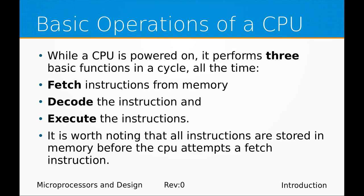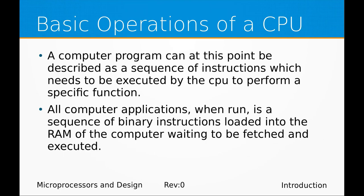When you power on a CPU, it basically does three things: fetch instructions, decode the instructions, and execute them. Before a CPU can fetch instructions, those instructions must already exist somewhere in memory. Any instructions we want the CPU to execute must be preloaded into memory — if they are not in memory, the CPU cannot fetch them. A computer program is defined as a sequence of instructions to be executed by the CPU to perform a specific function.